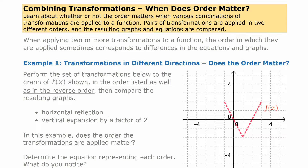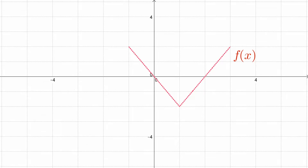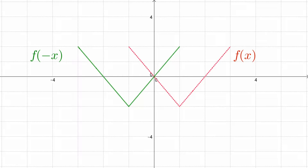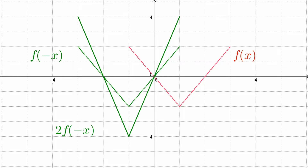We're going to do a horizontal reflection and a vertical expansion by a factor of two. There's our function. We'll do it first in the order shown: first we do the horizontal reflection, reflected across the y-axis. We achieve that by replacing x with negative x so all x values change sign. Then afterwards we do the vertical expansion, multiplying by two to get all y values to be twice as much. That's where that graph ends up.